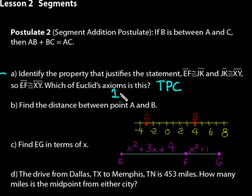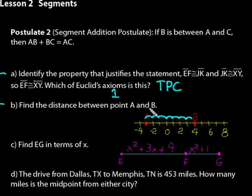Problem B: find the distance between points A and B. Remember, that's the absolute value between them. We can just count the tick marks: 1, 2, 3, 4, 5, 6, 7. The distance is 7. We don't have units here, but the distance between A and B would be 7 units — we just counted tick marks on the number line.